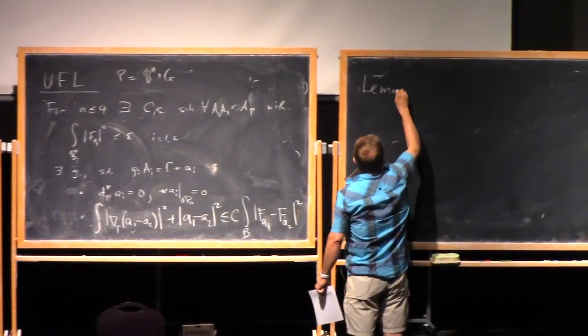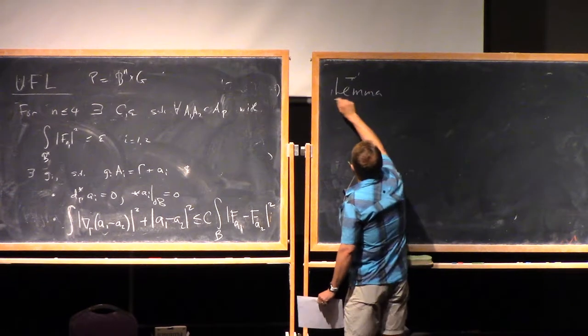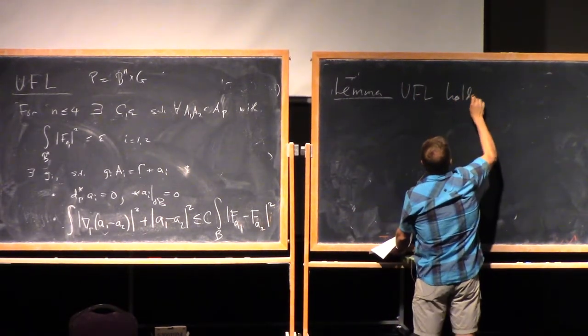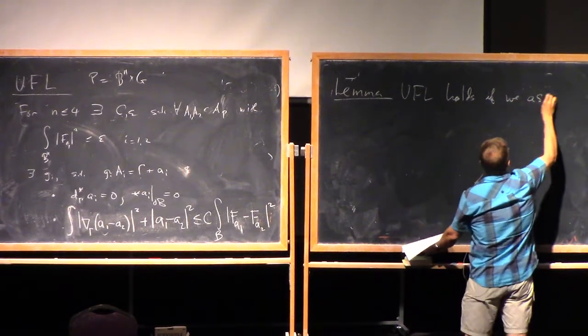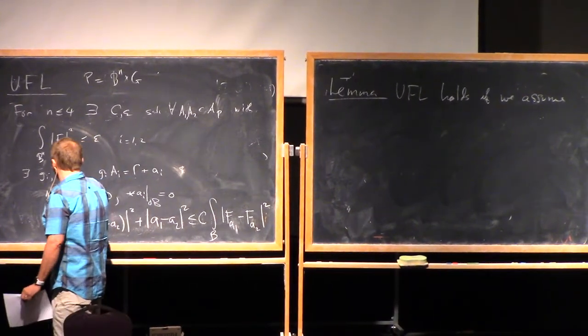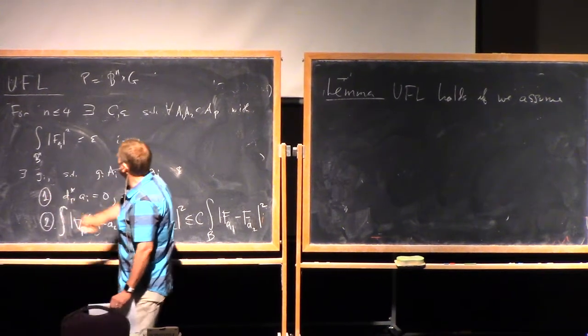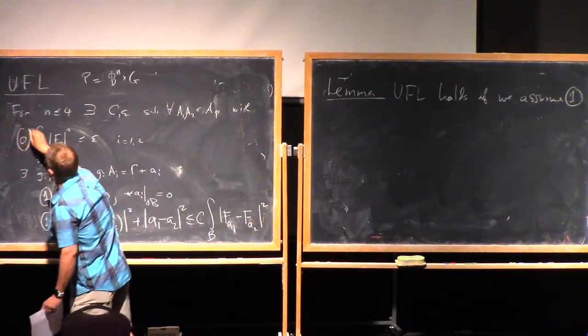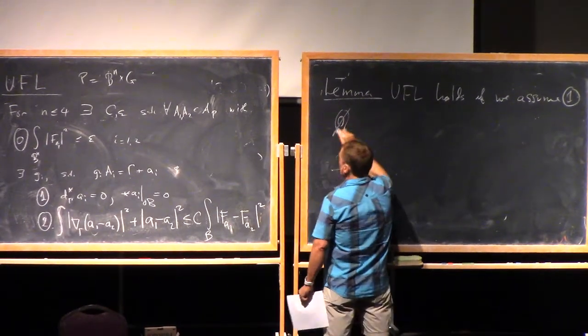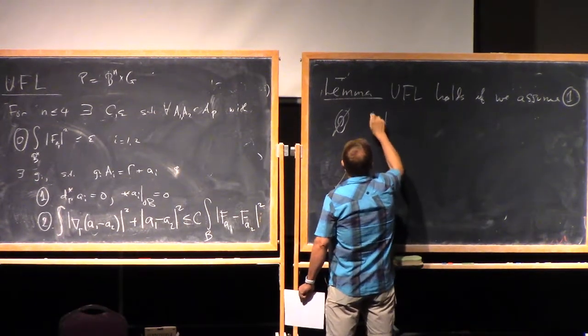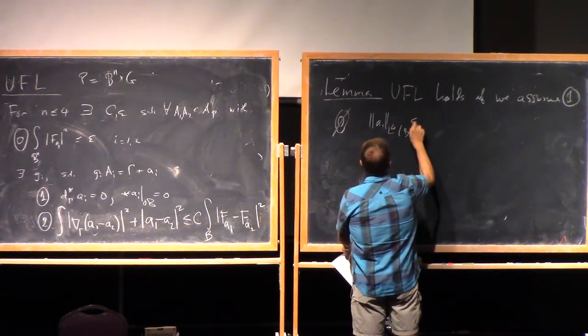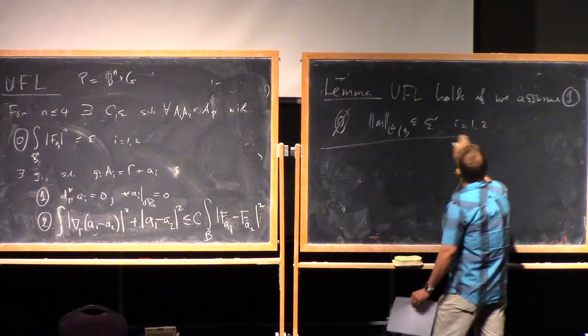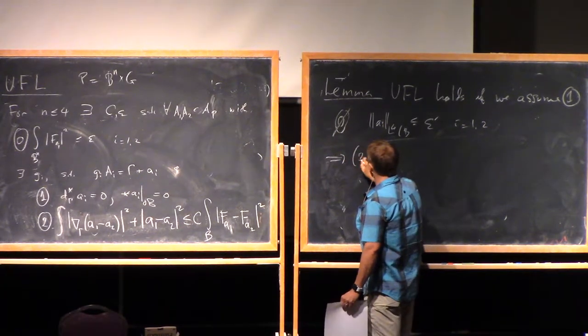So a lemma on the way to the proof to get you the feeling for what's special in dimension four, et cetera, is that Uhlenbeck's lemma holds if we assume, actually, let's call these one and two. So we're gonna assume one, that we've already got it in a good gauge. We're not gonna assume zero. We're gonna assume something stronger. We're gonna assume that the L^4 norm on the ball of both connections is less than some epsilon prime. Then that implies that two holds.